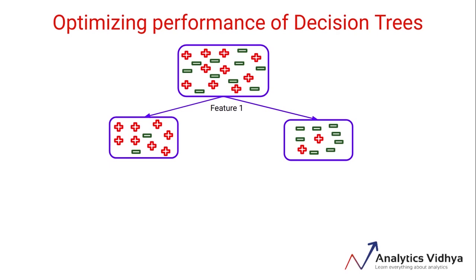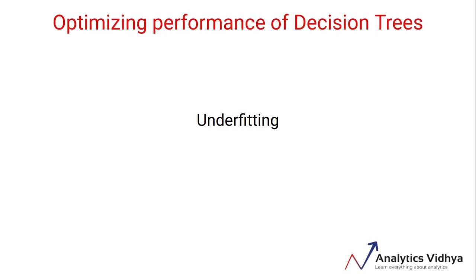By setting that hard constraint, the model will not be able to learn the pattern of the data. Its performance, even on the training data, might not be good enough, and this problem is called underfitting. So while working with decision trees, we must try to prevent both of these problems: underfitting as well as overfitting.